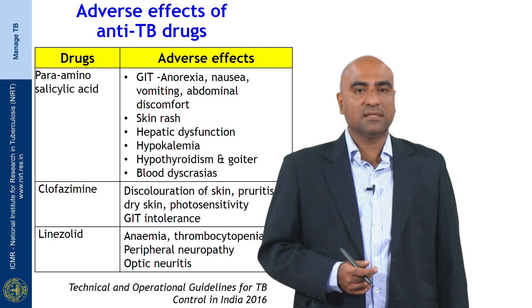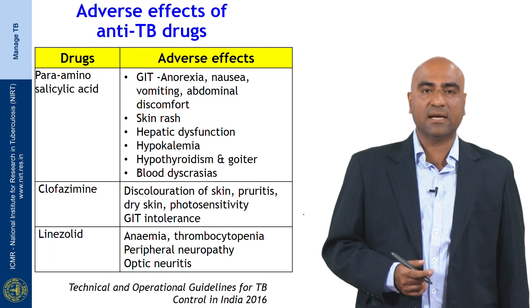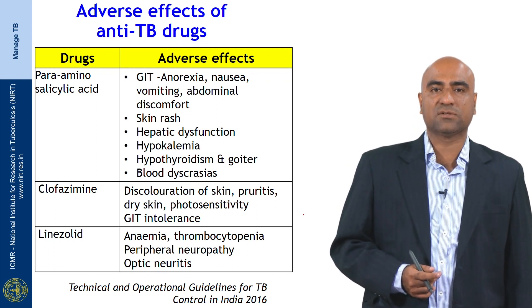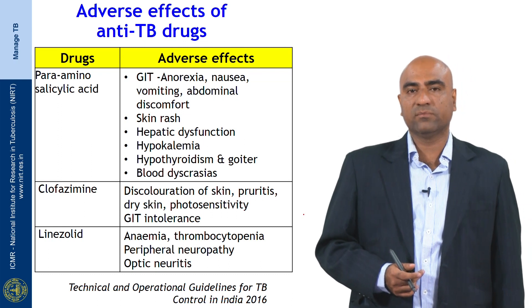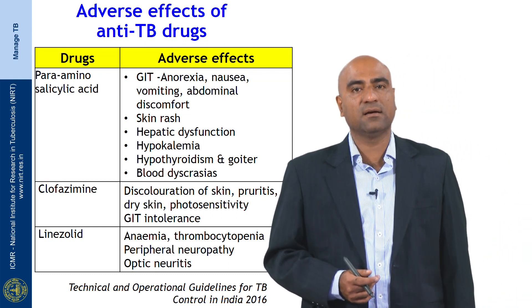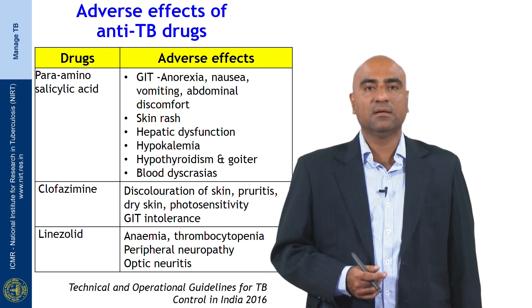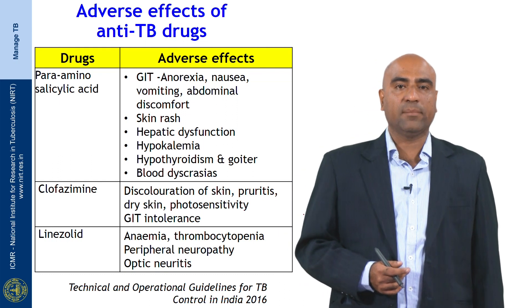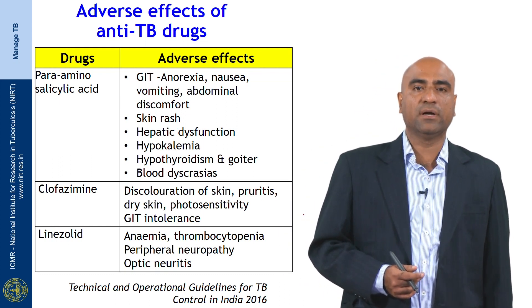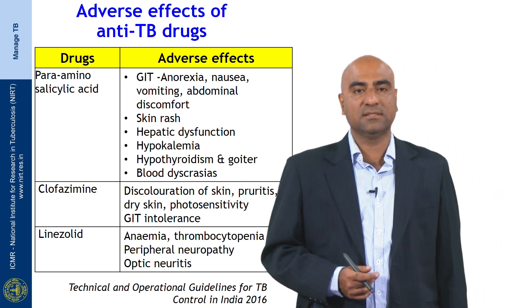Coming to para-aminosalicylic acid (PAS): the main adverse effects are again gastrointestinal — anorexia, nausea, vomiting, and abdominal discomfort. Other effects include skin rashes, hepatic dysfunction, hypokalemia, hypothyroidism, goiter, and blood dyscrasias. These are all associated with PAS use.